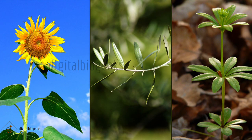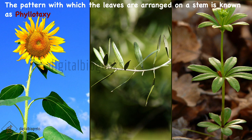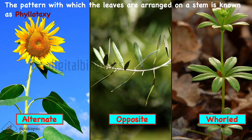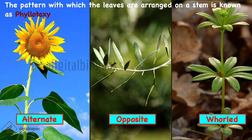The pattern with which leaves are arranged on a stem or branch is known as phyllotaxy. Phyllotaxy can be of three types: alternate, opposite, or whorled. In alternate phyllotaxy, a single leaf arises at each node and they are arranged on the stem alternately on both sides — for example, china rose, mustard, and sunflower.